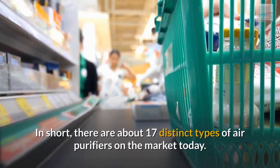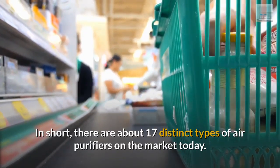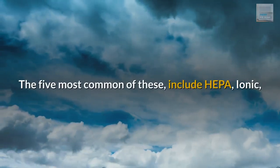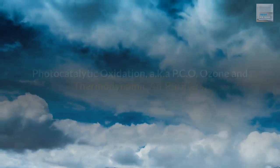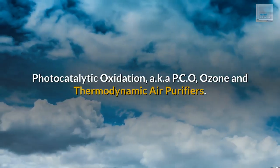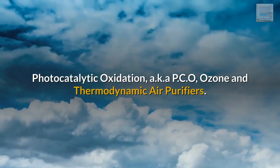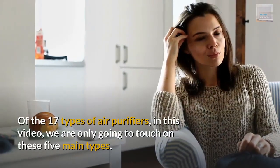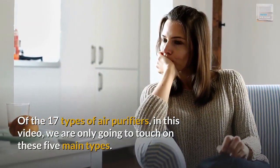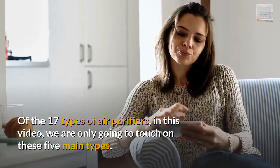In short, there are about 17 distinct types of air purifiers on the market today. The 5 most common of these include HEPA, ionic, photocatalytic oxidation (aka PCO), ozone, and thermodynamic air purifiers. Of the 17 types of air purifiers, in this video, we are only going to touch on these 5 main types.